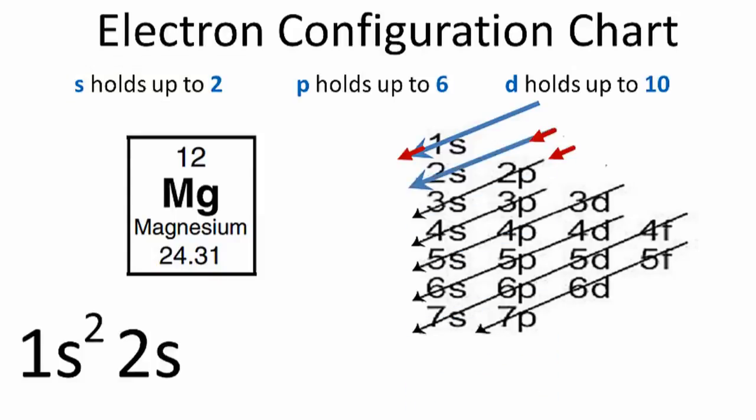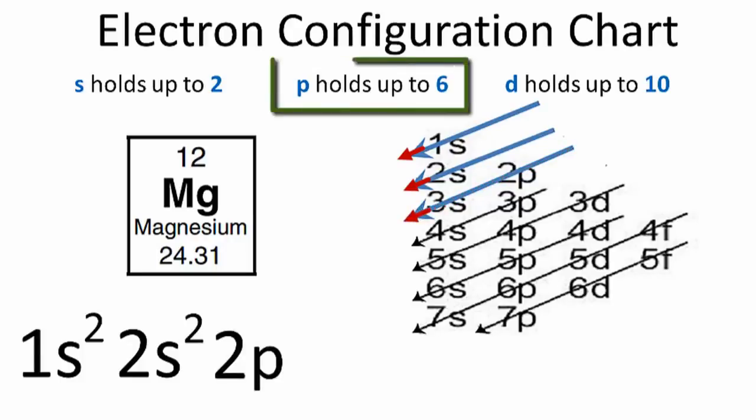In the next row, we have the 2s. We put two electrons in the 2s orbital. In the third row, the first term is 2p. P orbitals can hold up to six, so in this case, let's put all six in the 2p orbital.